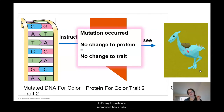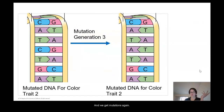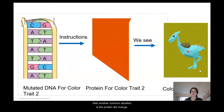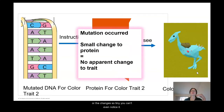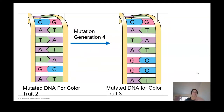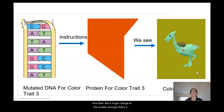Another common situation: this ostrilope reproduces and we get mutations again — the protein did change, but in such a small way that the trait either didn't change or the change is so tiny you can't even notice it. Now for the one people think happens all the time but only occurs occasionally: we have reproduction, we get a mutation, and there's a huge change to the protein — enough that the trait you end up seeing is different from before, at least somewhat different.